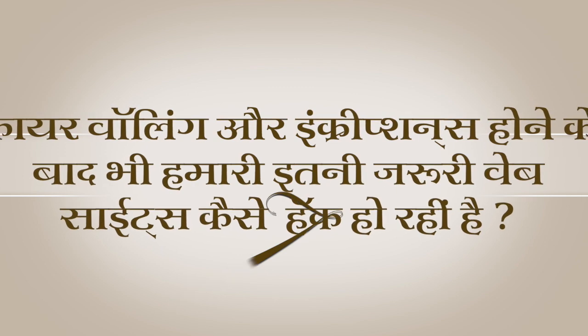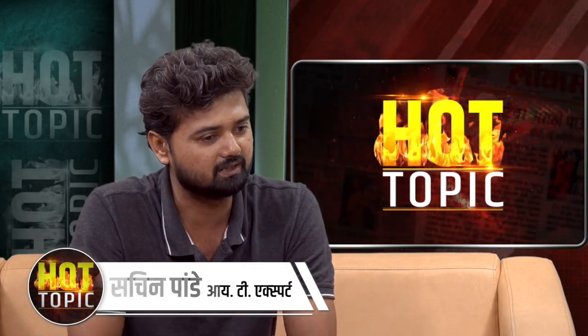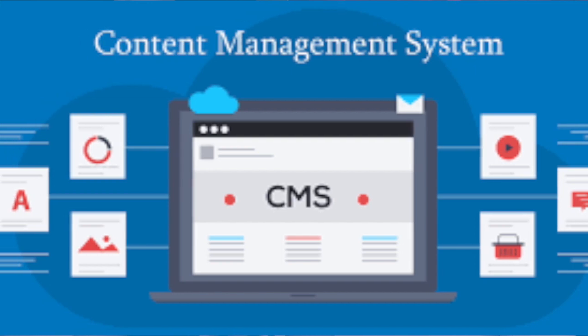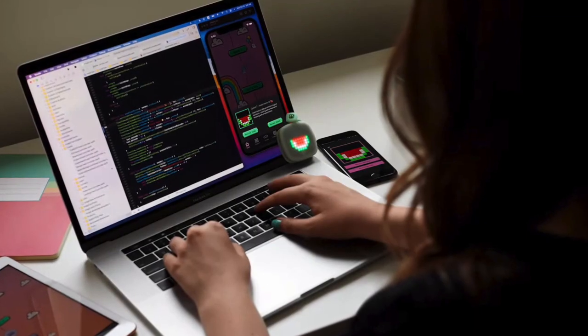Pehla sawaal yeh hai ki firewalling aur encryption ke hote hue bhi kaise yeh attackers hamaari itni important websites ko hack kar lete hain? Firewall aur encryption ek tarah ki diwar lagayi hui hai jo attacks ko rok sake. Lekin aaj kal ki websites jo banti hain — due to low budget — users CMS choose karke uske base par website bana lete hain. CMS yaani content management system mein bahut saare loopholes hote hain jo updated nahi hote, aur unke plugins bhi latest configurations ke saath update nahi hote. Isi wajah se attacks ki sambhavna 70-80% badh jaati hai.